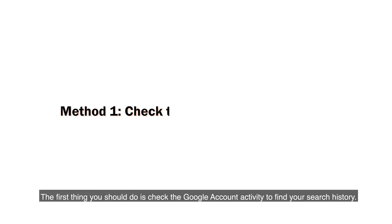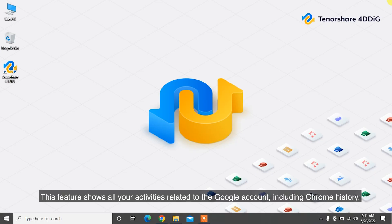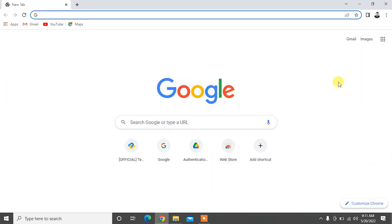The first thing you should do is check the Google account activity to find your search history. This feature shows all your activities related to the Google account, including Chrome history.